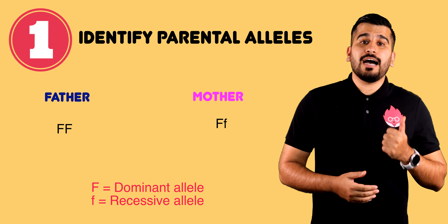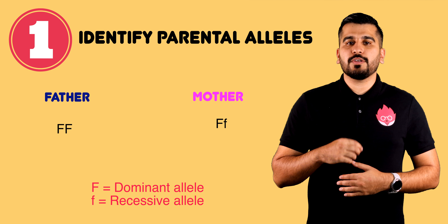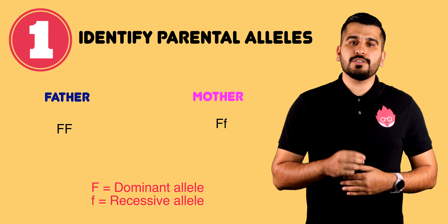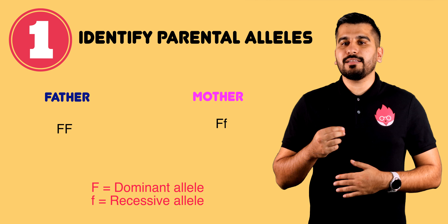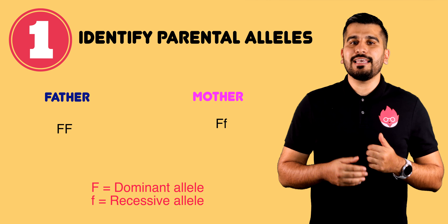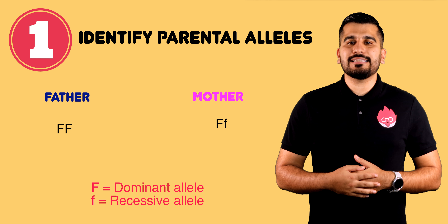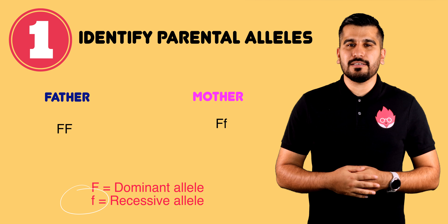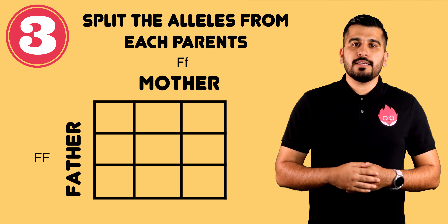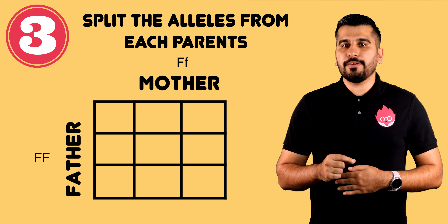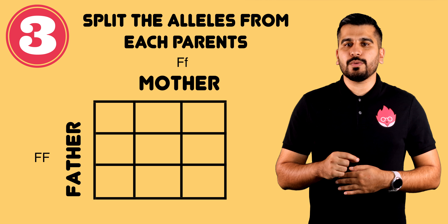Firstly, identify the parent's genome. If the question has not given you a letter to use, you may use any letter you like, remembering that a dominant gene is always represented by a capital letter and a recessive gene by a lowercase letter. Draw a table as shown here, splitting the alleles from each parent and then adding them into your Punnett square.